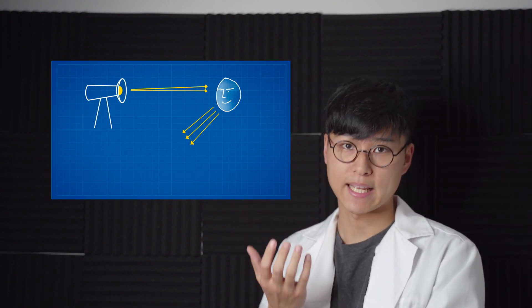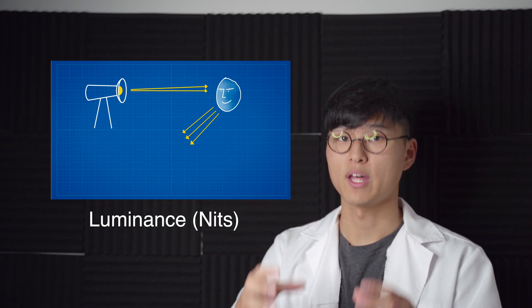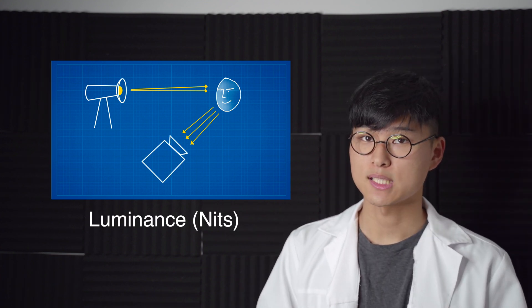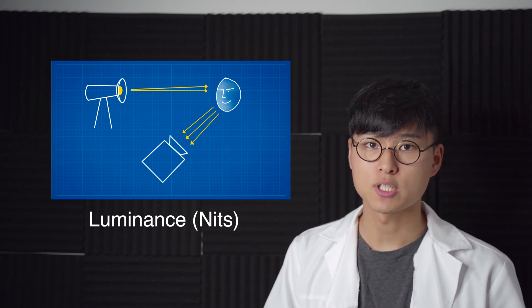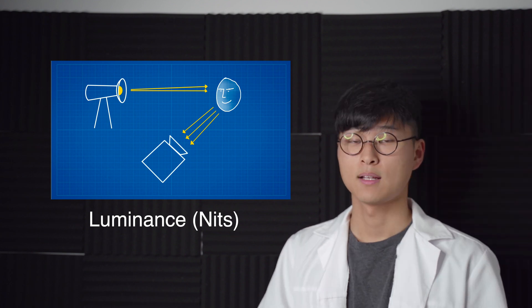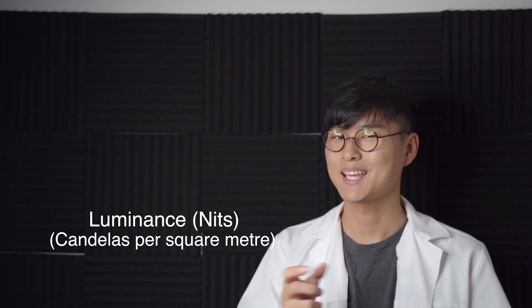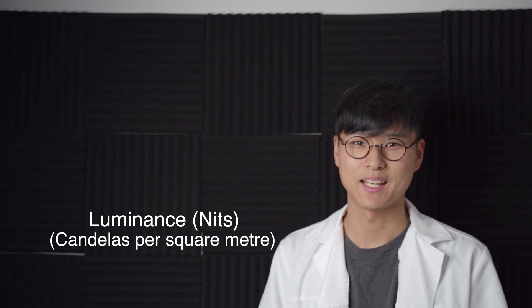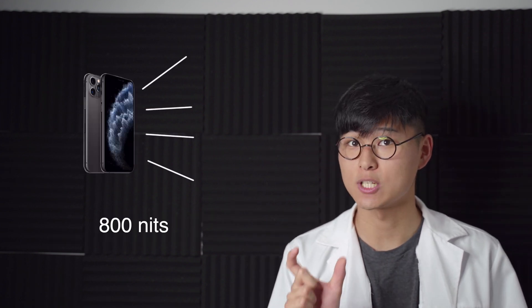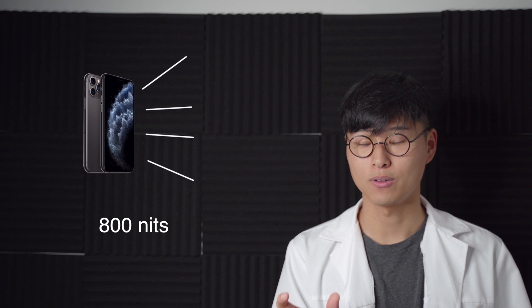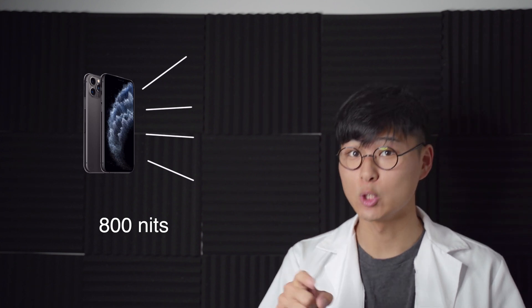When the light hits the subject and reflects off of that subject, it creates what we call the luminance. This is what cameras and our eyes pick up, and it's measured in nits — or candelas per square meter. Remember in my last video how we talked about how the iPhone had 800 nits of brightness? Well, that is the luminance.